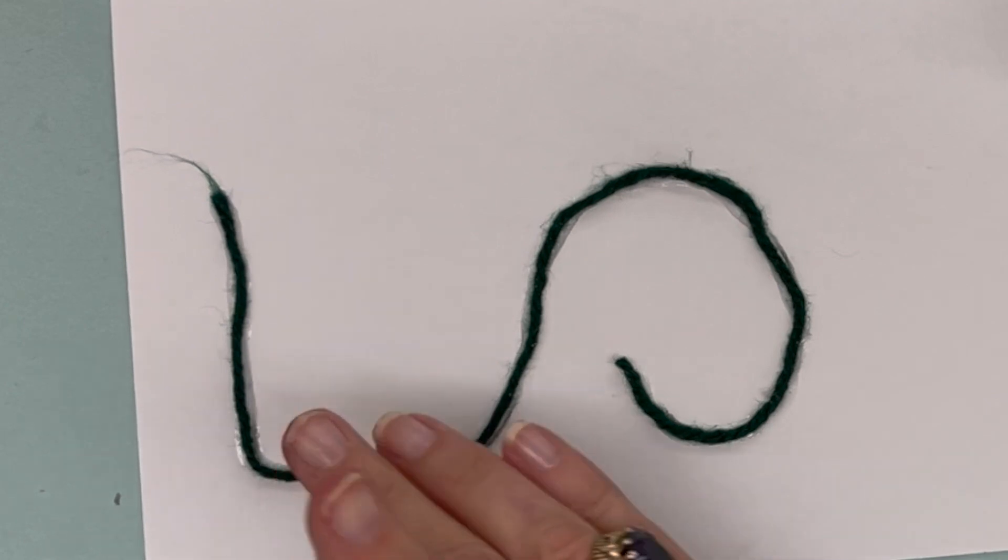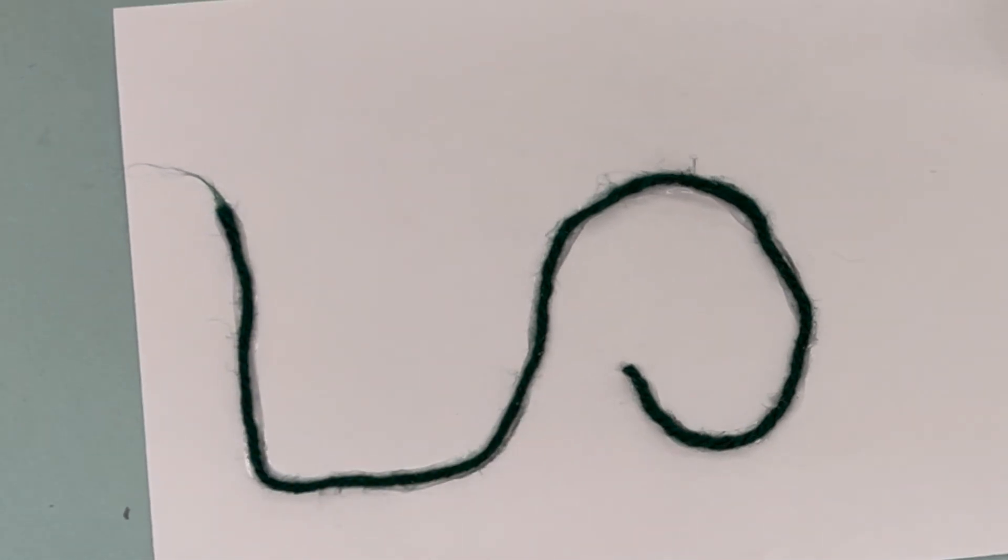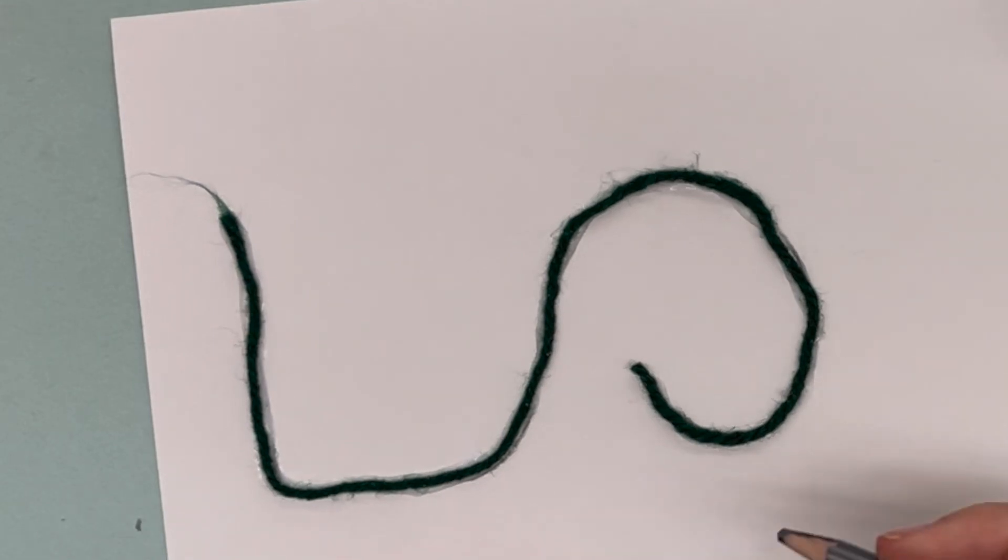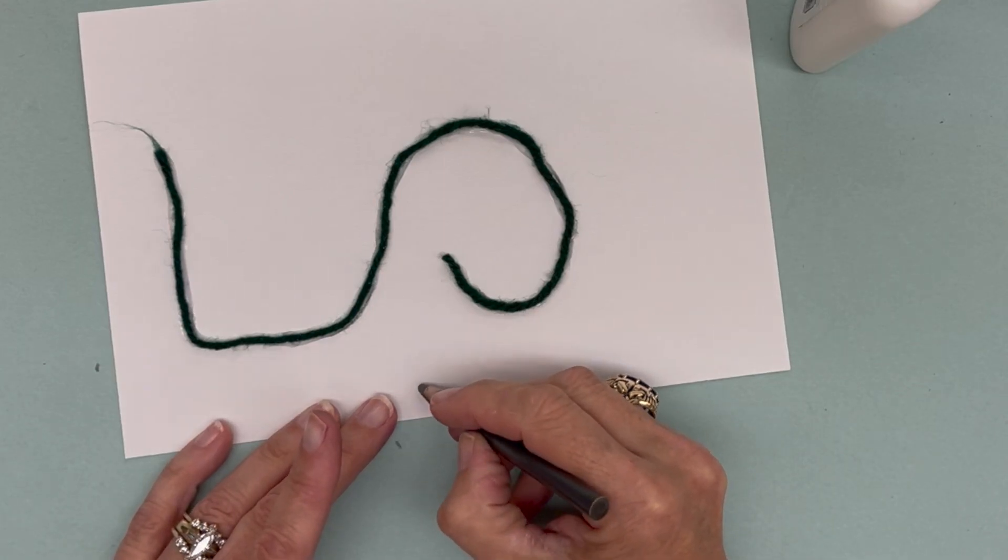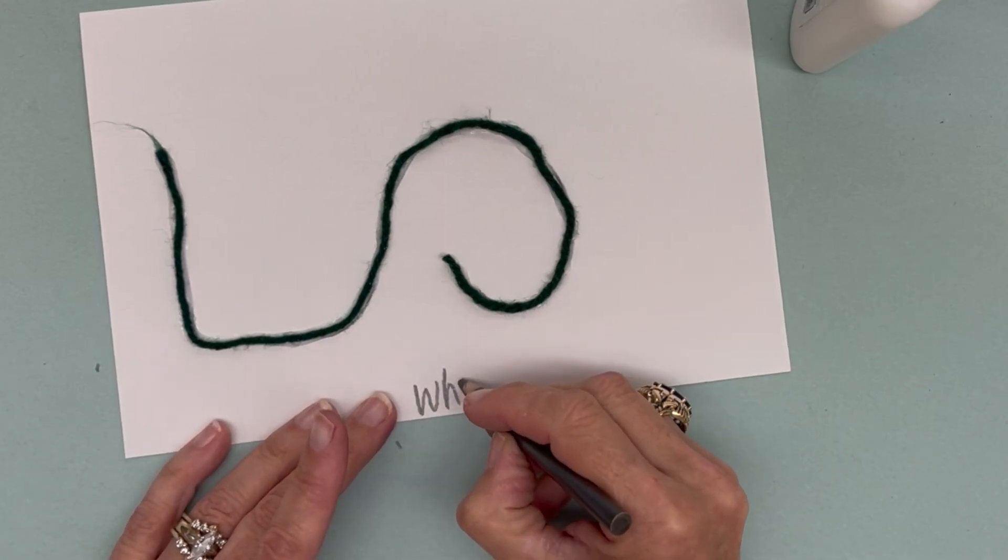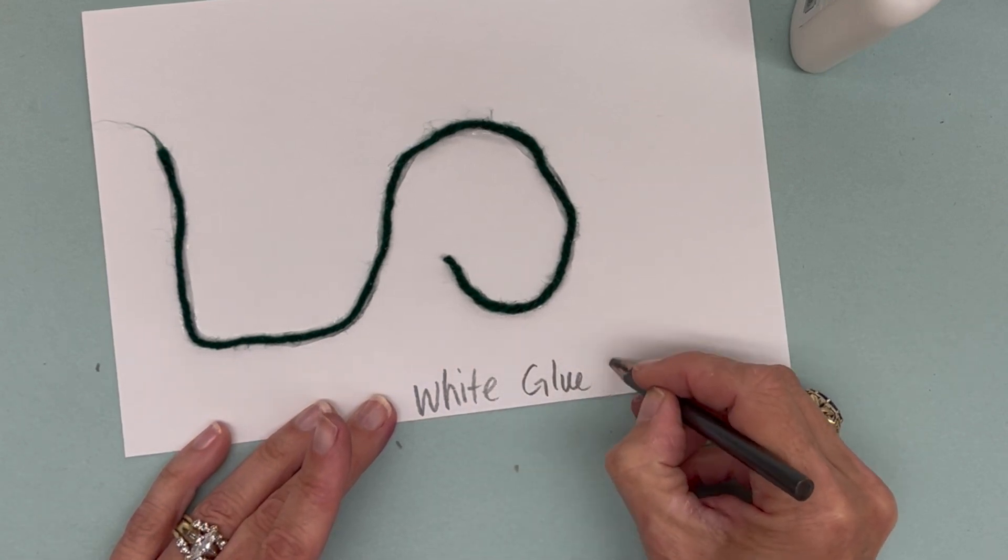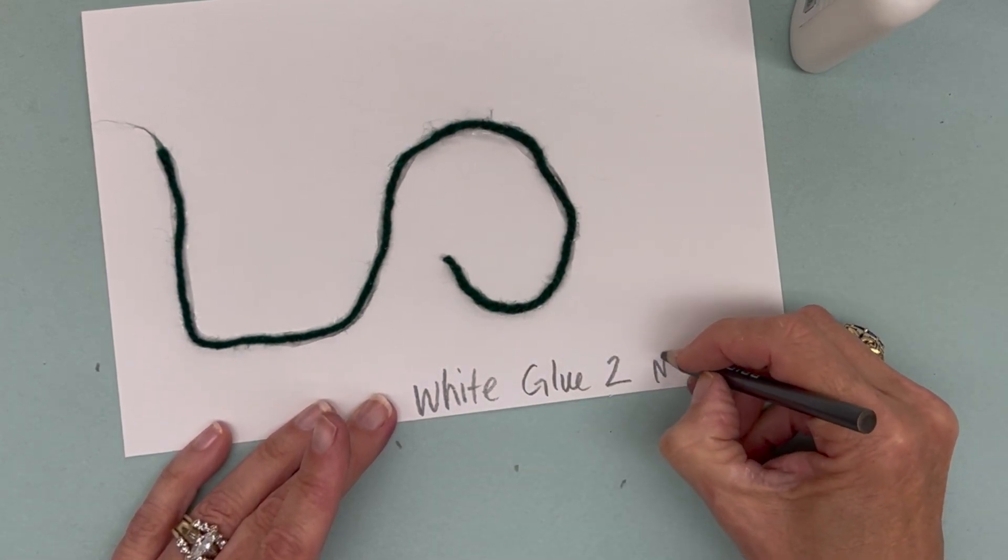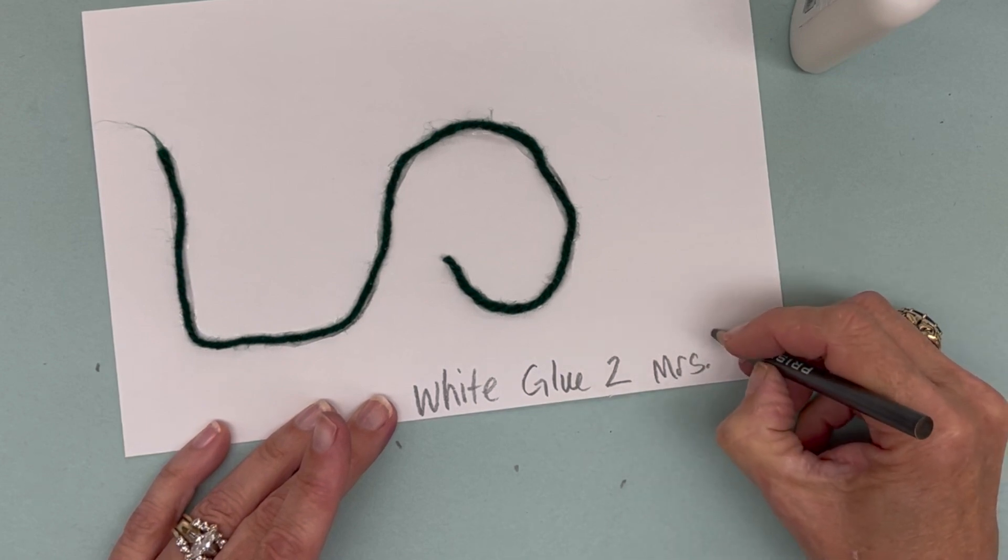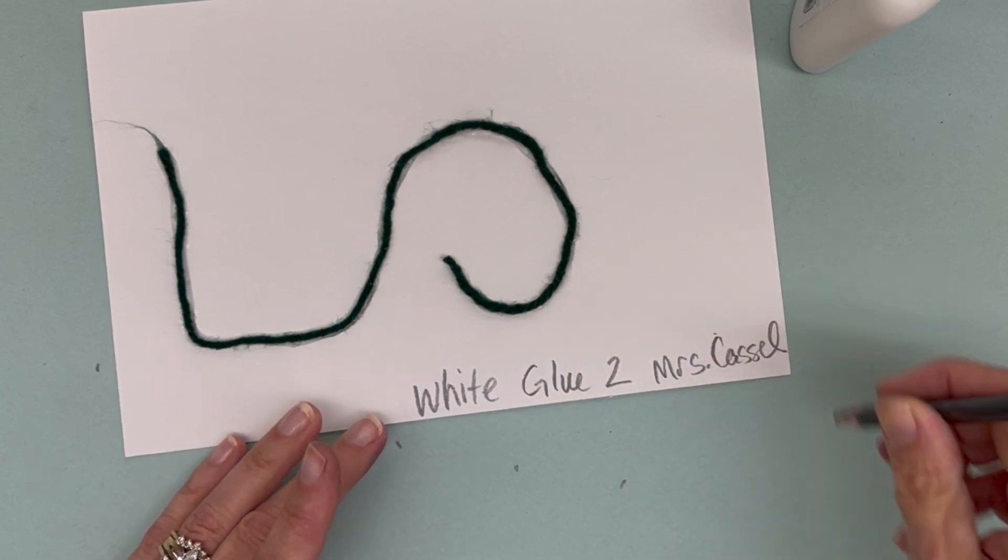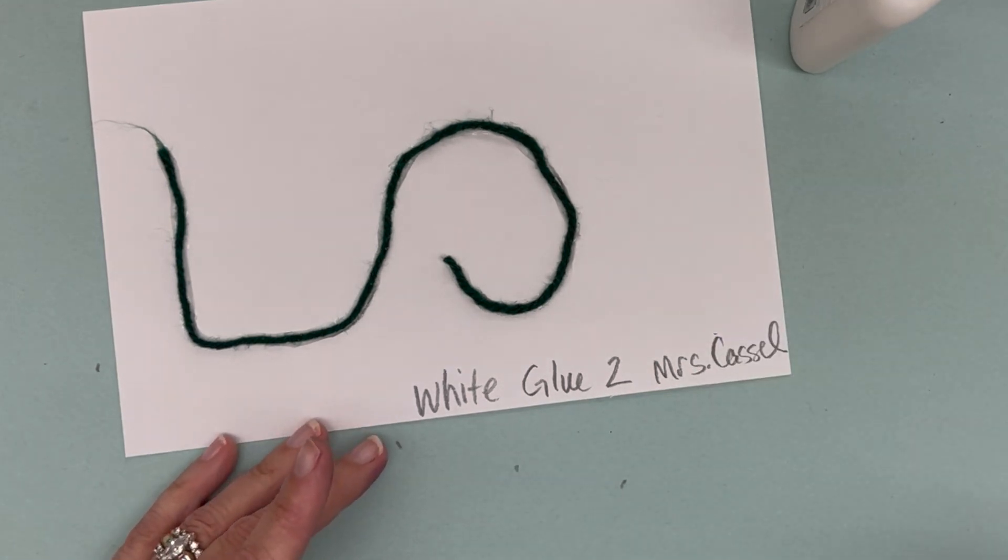This one's going to take a while to dry. So after you label it white glue two and put your name on it, take your picture and this can go on the drying rack.